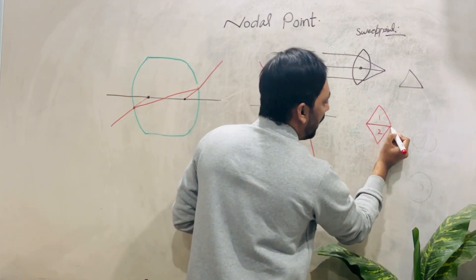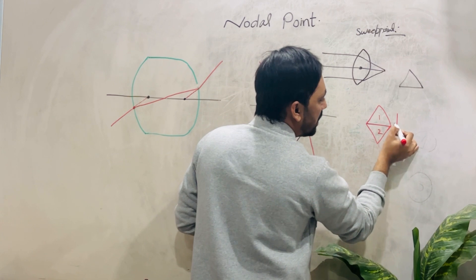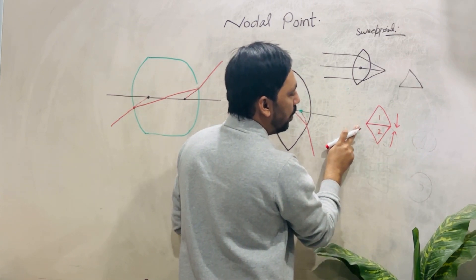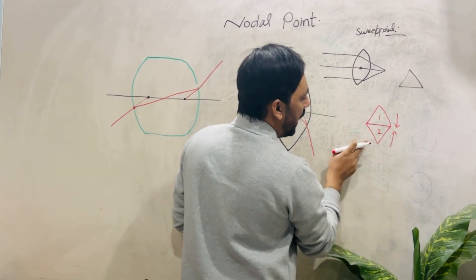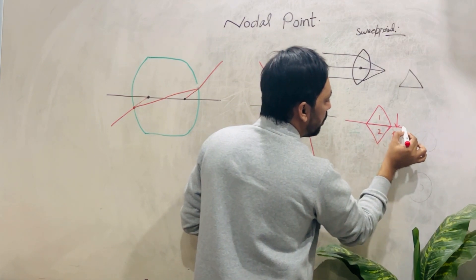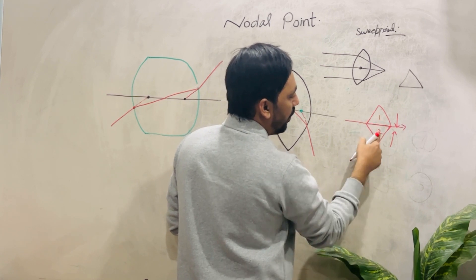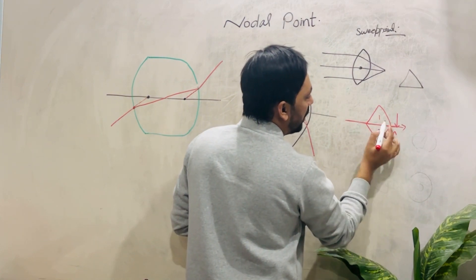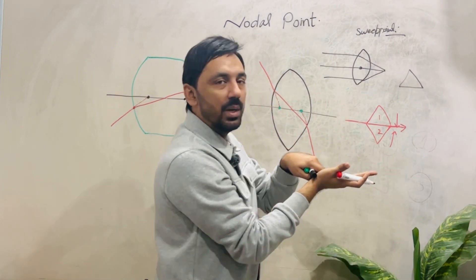Why? Whenever two prisms are attached such that one prism is showing base down and one prism is showing base up, there is a base-up and base-down effect in the plus spherical lens. When light passes through the point where the two bases are attached — one showing base down and one showing base up — the light ray passes straight ahead. This point where the two bases are attached is called the optical center.